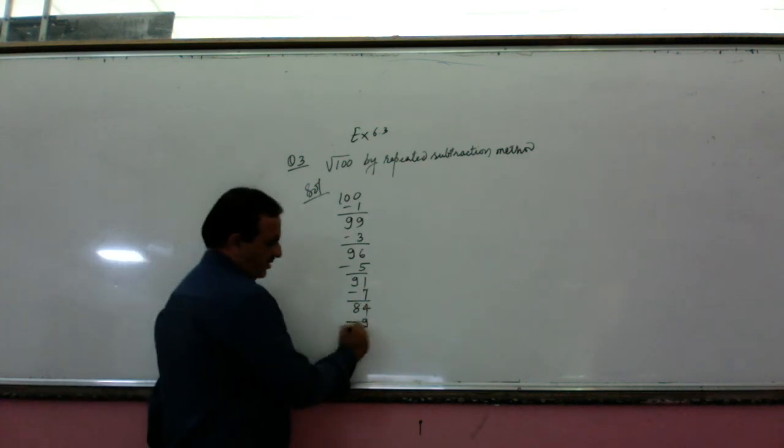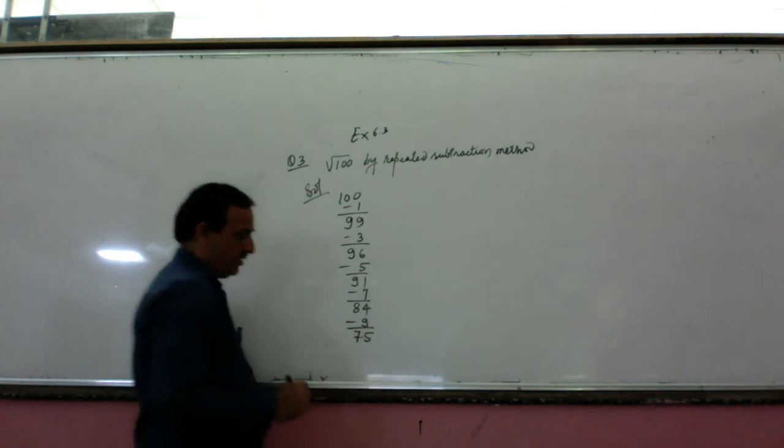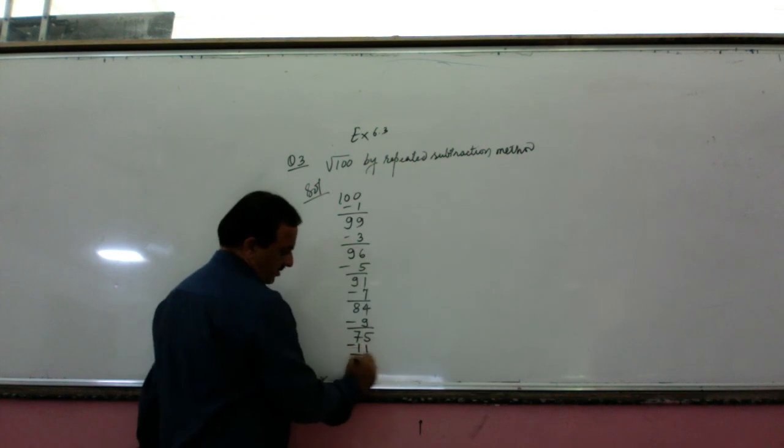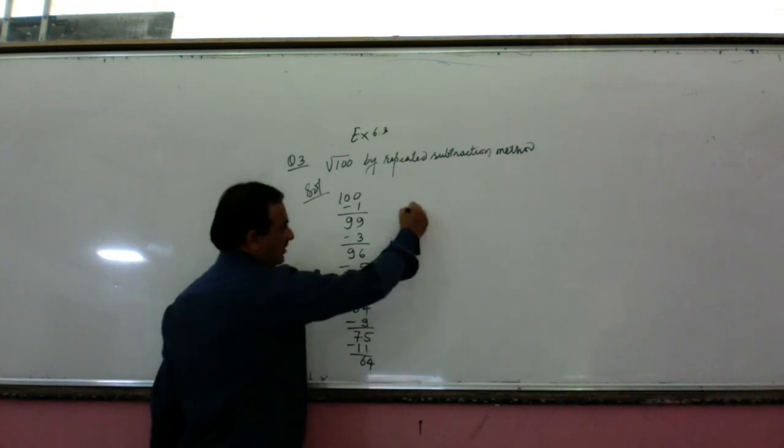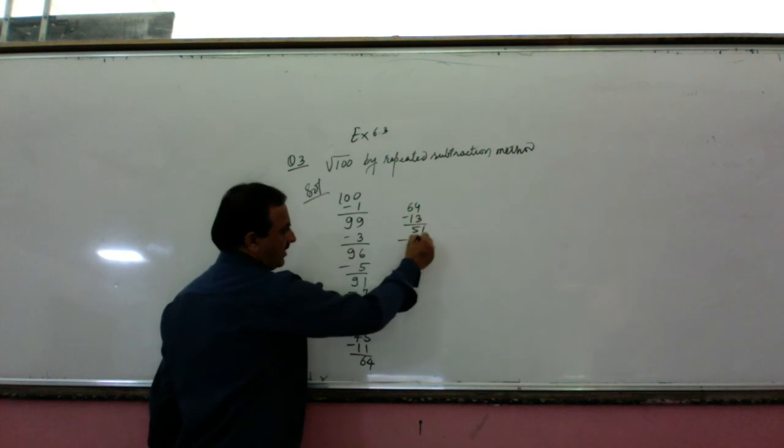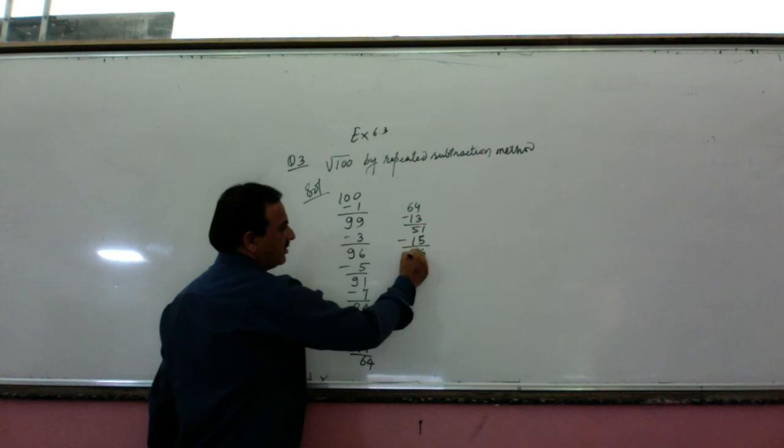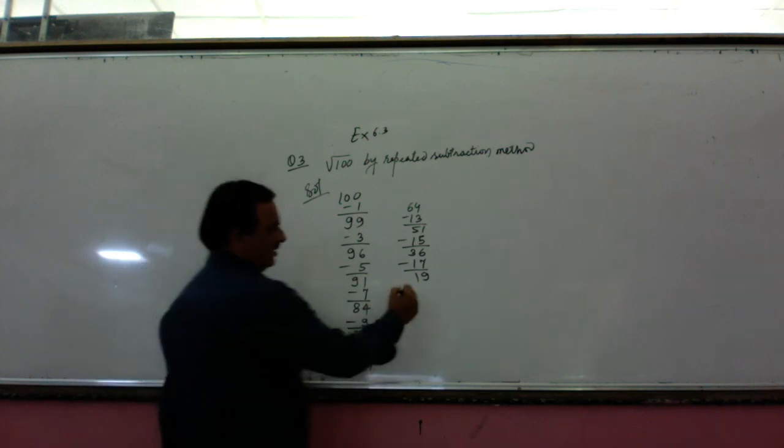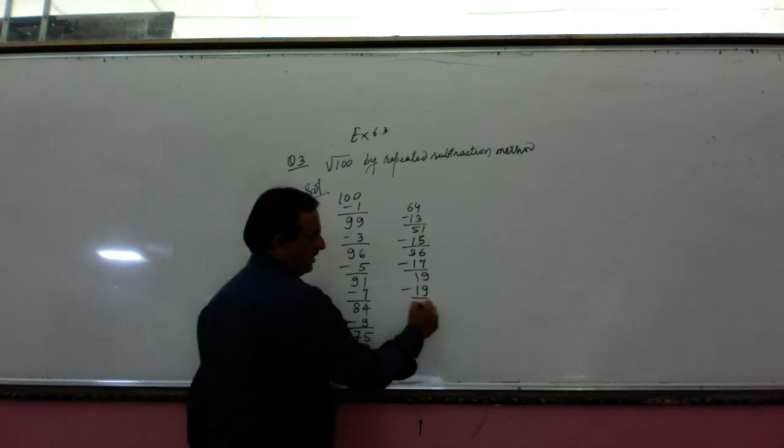Again subtract 11 is 64. Subtract 13 is 51. Subtract 15 will be 36. Subtract 17 will get 19. Then subtract 19 will get 0.